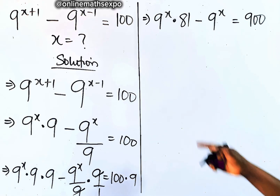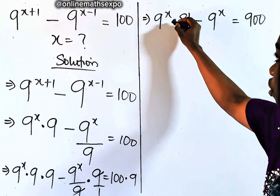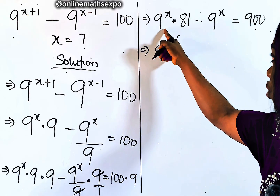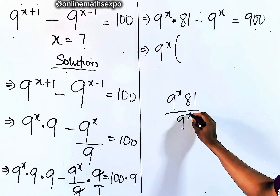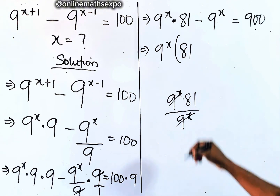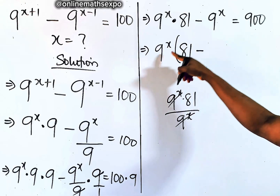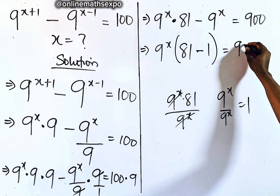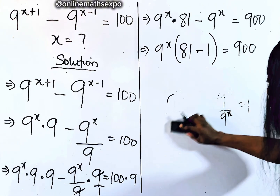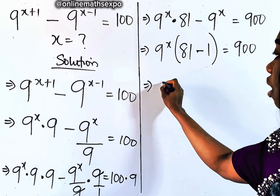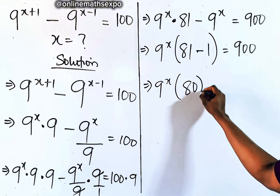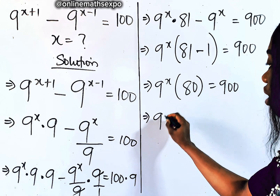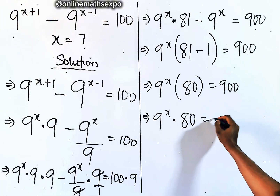What do you think we should do next? You see that 9 to the power of x is repeated, so we are free to factor it out. We're going to factor 9 to the power of x out and use it to divide these two. When you divide by 9 to the power of x you're left with 81 here, and when you divide a number by itself it gives you 1. So we have 9 to the power of x times 81 minus 1, which gives us 9 to the power of x times 80, equal to 900.